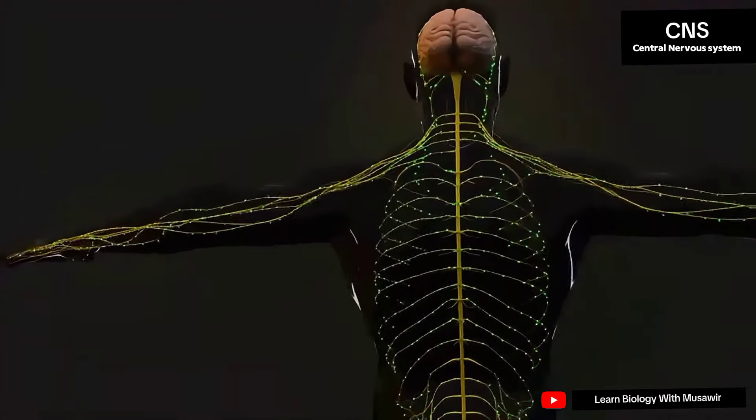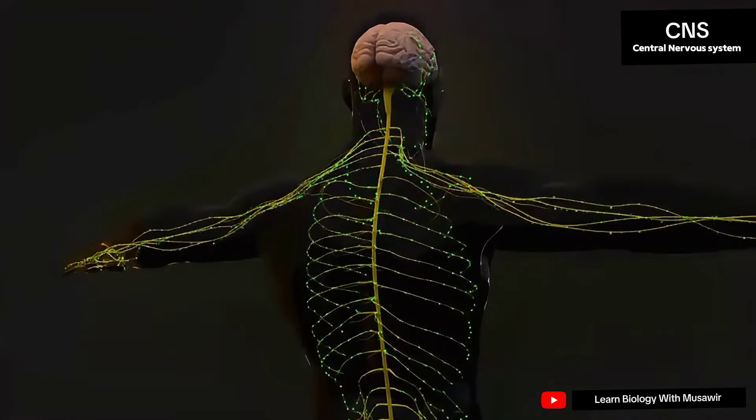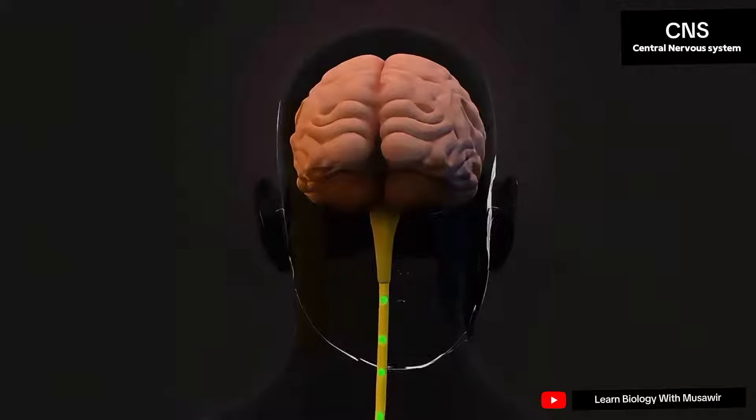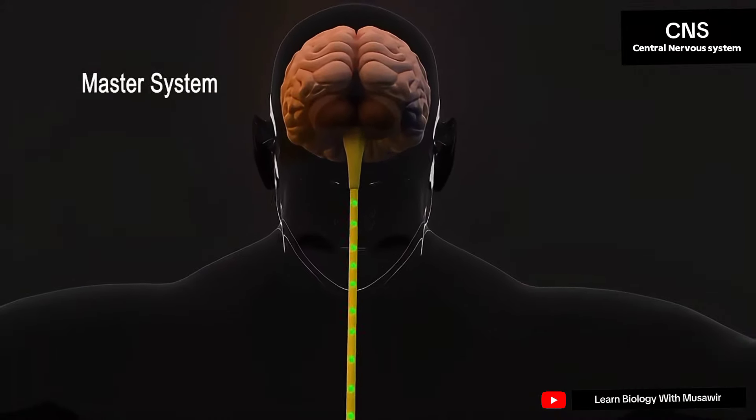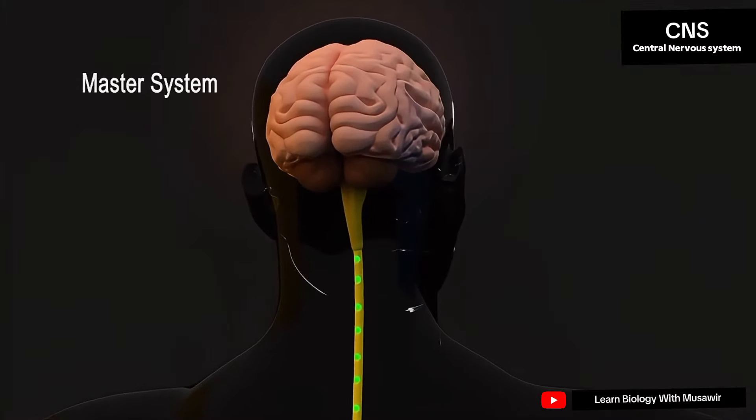Did you know that the most important part of your entire body is your central nervous system? Your central nervous system, also known as the master system, is made up of your brain and your spinal cord, and it controls every single function in your entire body.